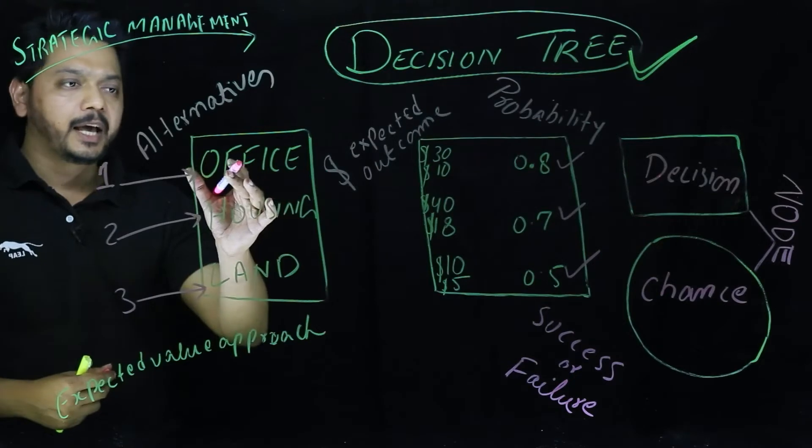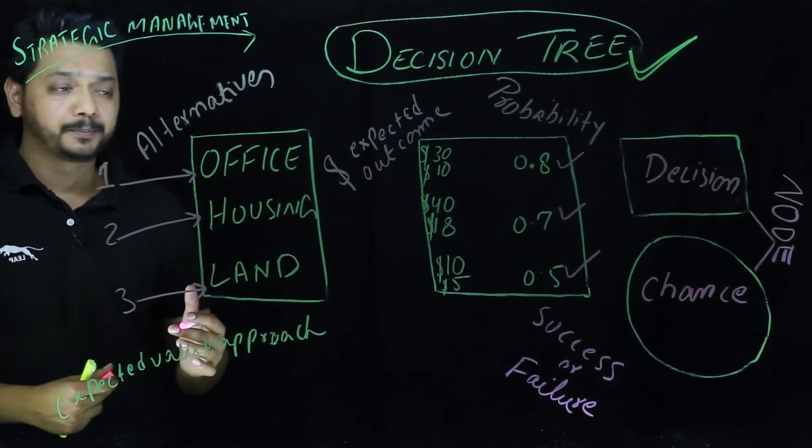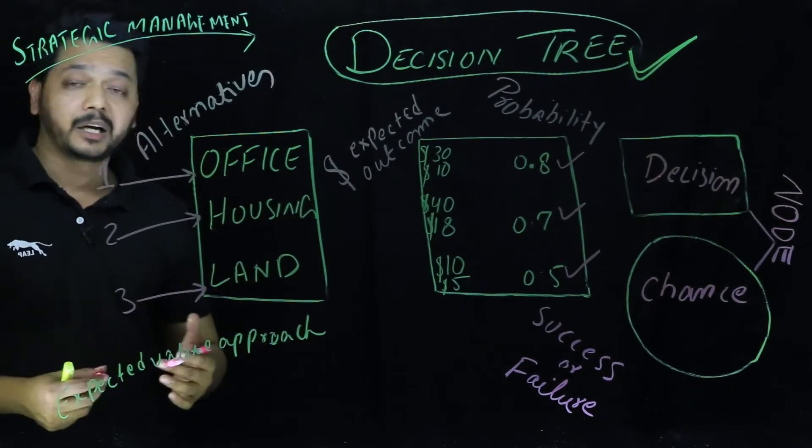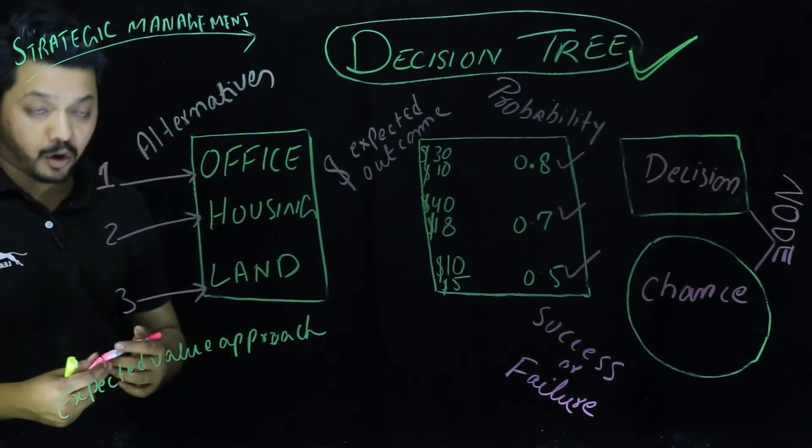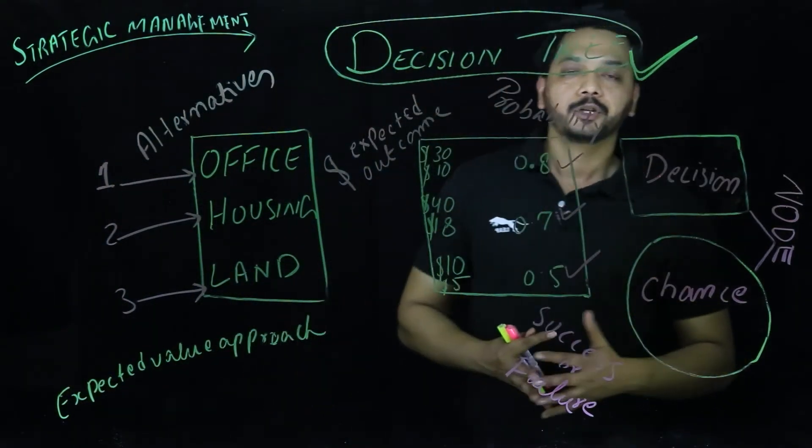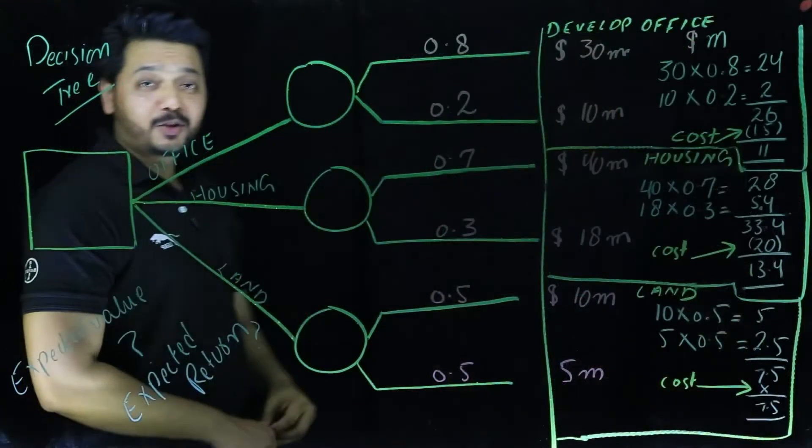In other words, an office has a high chance of a risky approach. Housing can be a less risky one and land can be a very risky one, according to the information that is available to a business with the market information. So let's discuss this in the form of a decision tree analysis.